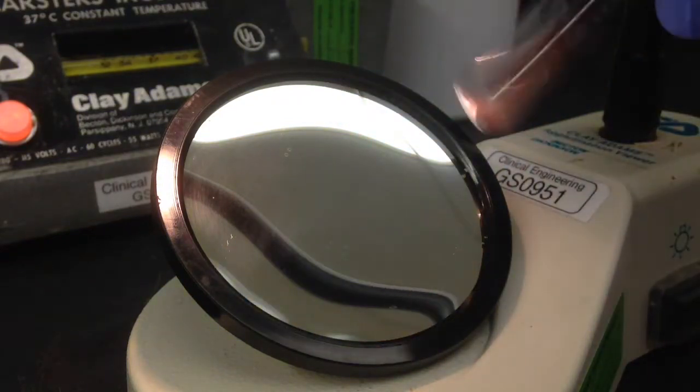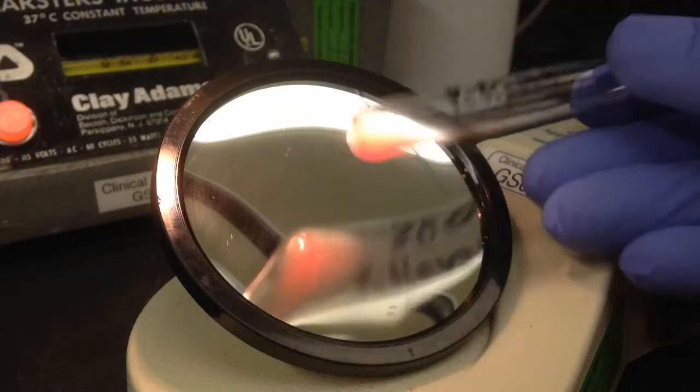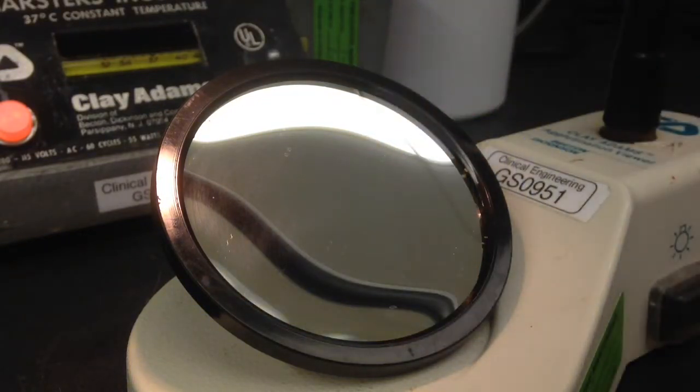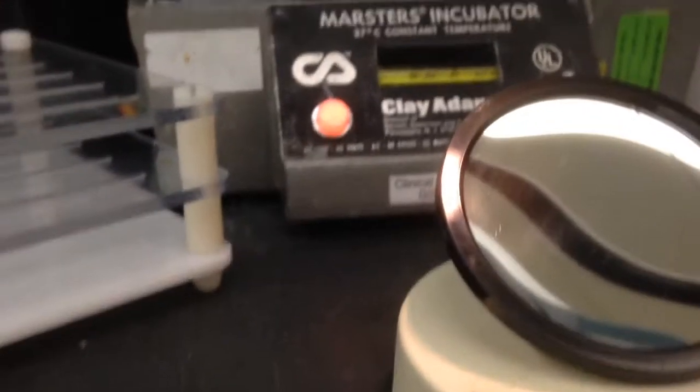After this, I'm just trying to re-suspend the cell button there, nice and full. So after this, you're going to want to move to the next step, which is going to be the 37 degrees step.